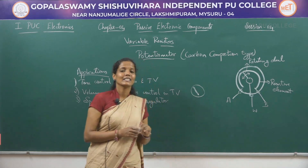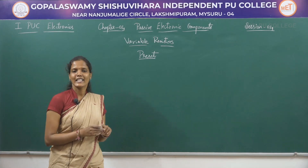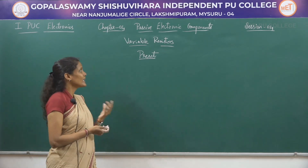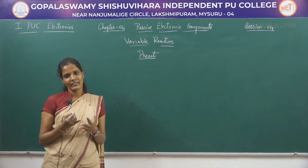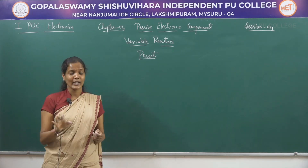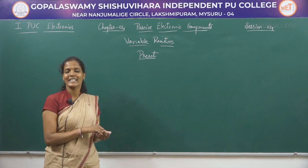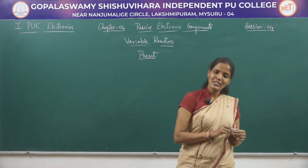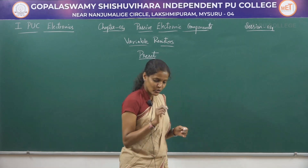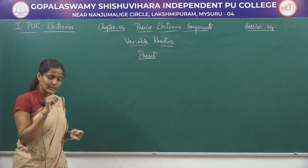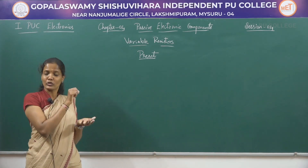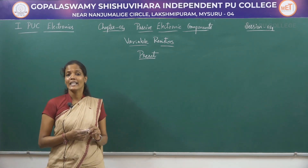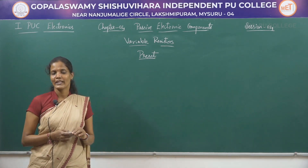We will now move on to the next type of variable resistor — the preset. These presets are also a type of variable resistor. They are essentially potentiometers whose size is very small and they can be placed on PCBs, similar to SMD (surface mounted device) resistors. Unlike SMD resistors, the resistance value of a preset can be changed using a small screwdriver during alignment. The preset is placed on PCB boards and its resistance value is changed with the help of a screwdriver. These presets are most widely used in TV receivers and in electronic circuits for calibration purposes.